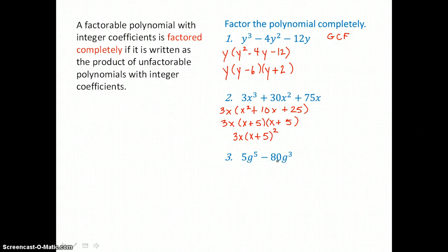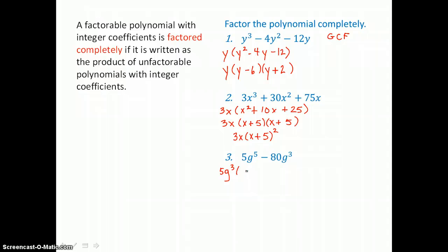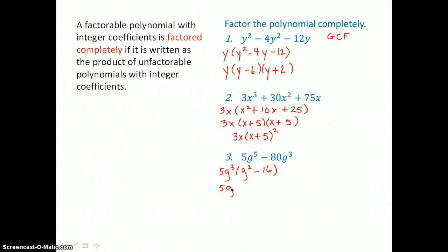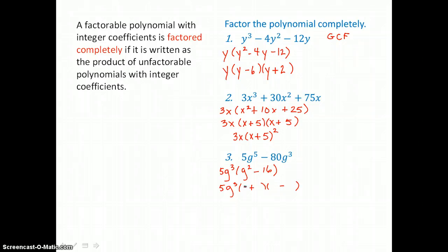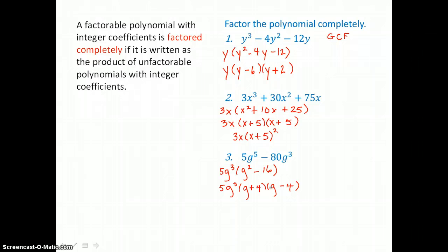In the third example we only have two terms, but there is a greatest common factor of 5g cubed. We factor that out first, leaving g squared minus 16. What's left is the difference of two perfect squares, so we factor it into a binomial times a binomial — the sum and difference of the square roots. The square root of g squared is g, and the square root of 16 is 4. Positive 4 times negative 4 is negative 16, and the inner and outer products sum to zero, so there is no middle term.